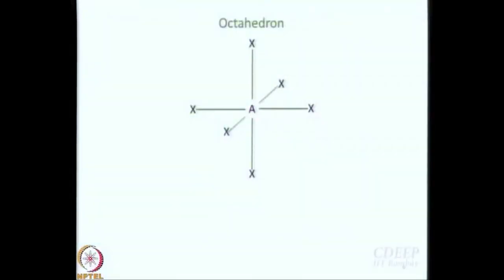Now, let us talk about octahedron. Octahedron is also an old friend. Whenever you talk about metal complexes, more often than not you talk about octahedral complexes. In the previous class we talked about the balloon experiment — if you have 6 balloons of equal size, tie them in twos and then tie them together, you will get an octahedron.